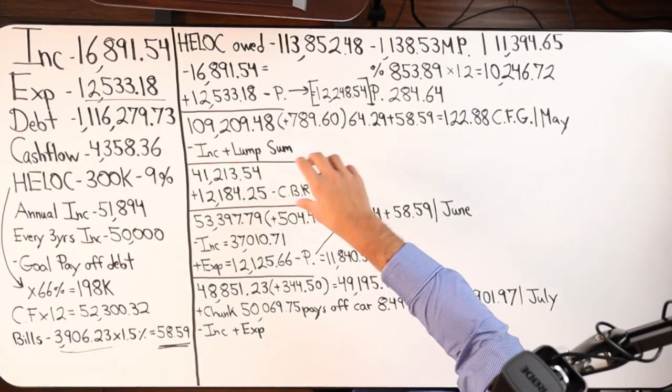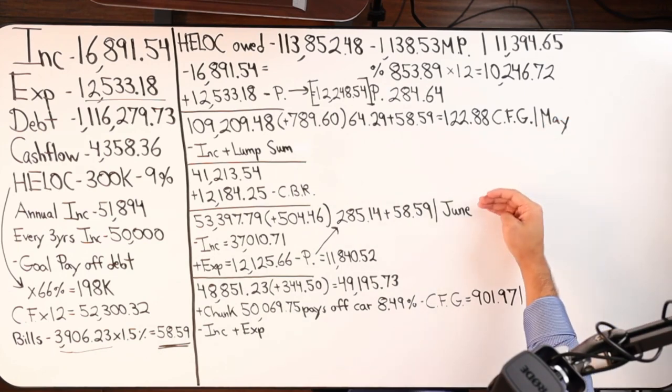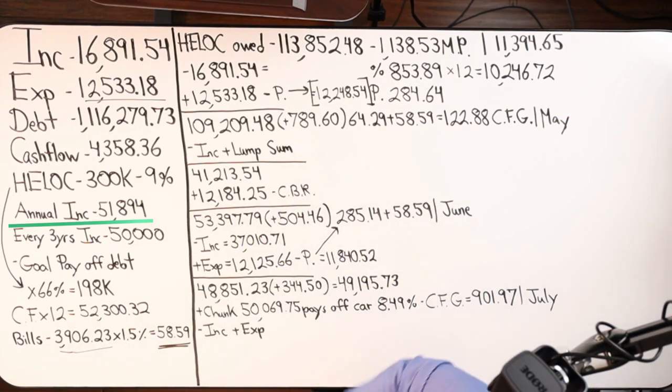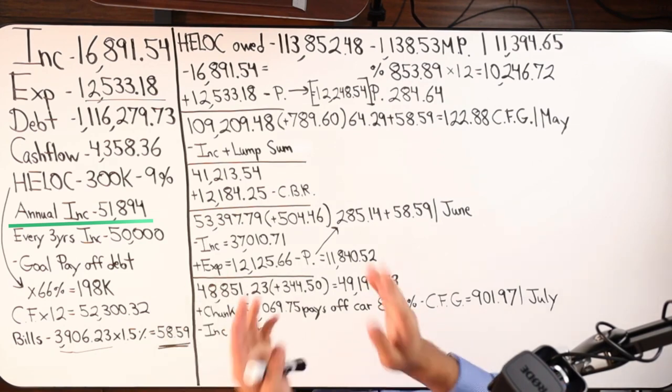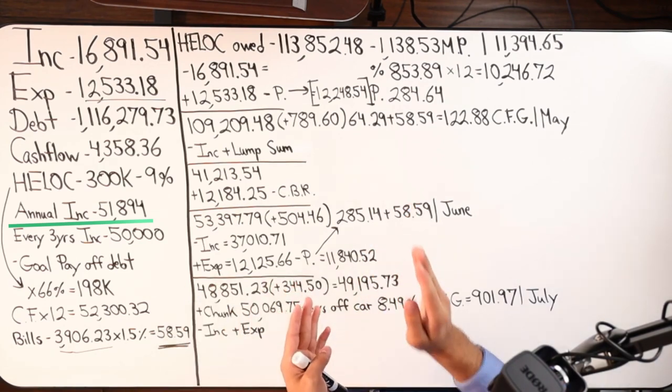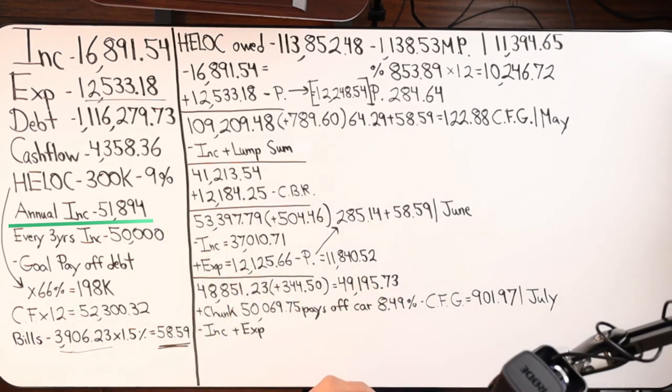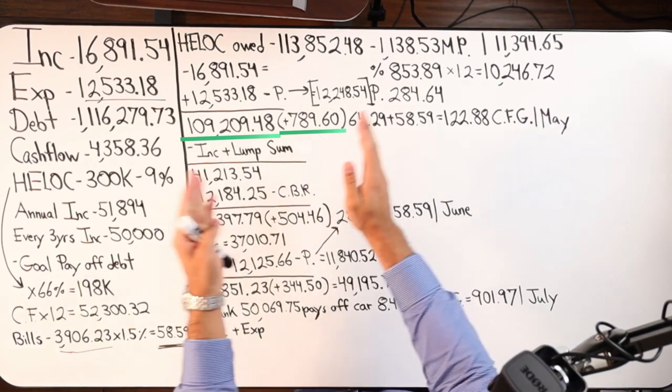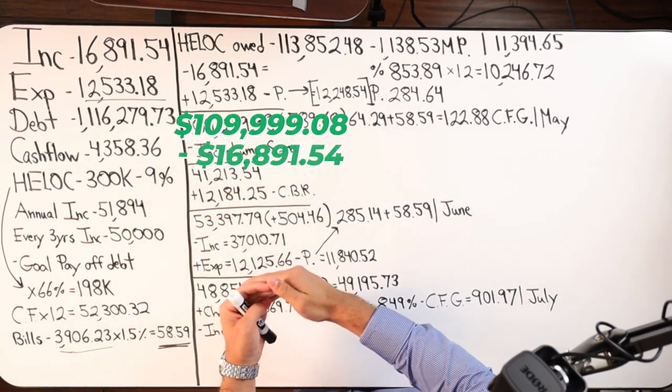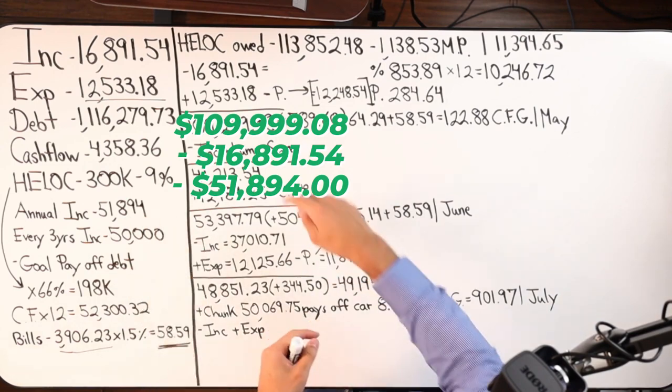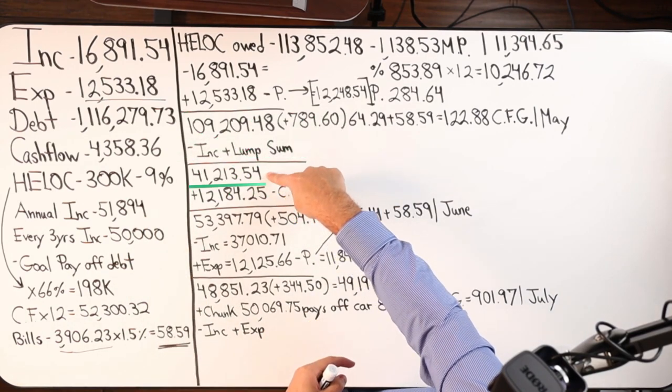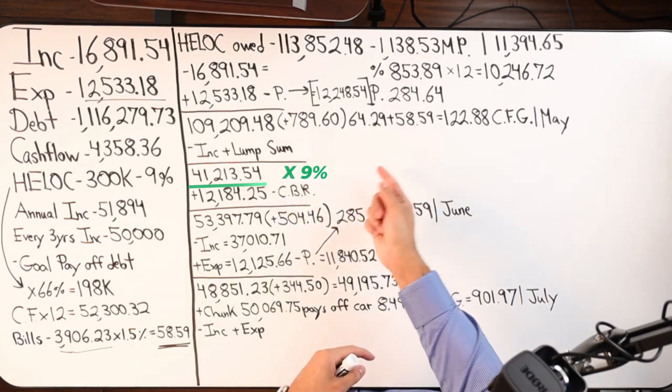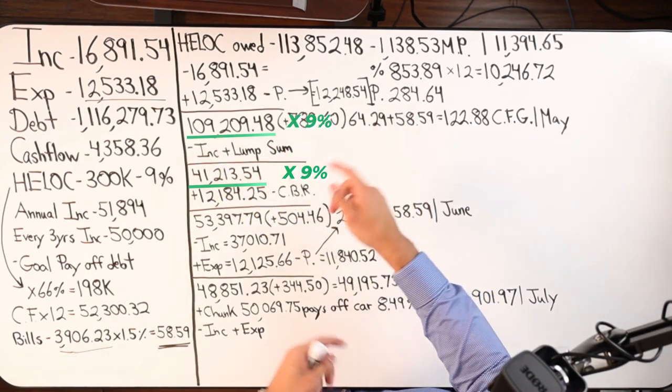So now the following month is June. In June is when I'm getting this payout of $51,894 comes every year, same time in June. So what are we going to do? We're going to park that money right in the HELOC, drastically reduce it. So I did 109,209.48, and then add this number. Once you add that number up, then minus income, then minus lump sum, you should get this number 41,213.54. Again, take that number times it by 9%, divide by 365, you can get your daily costs.